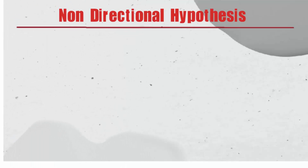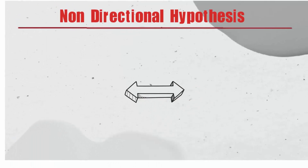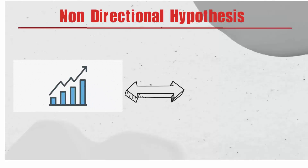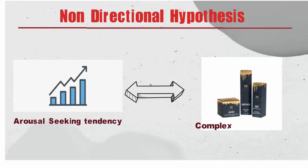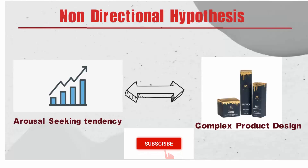For example: there is a relationship between arousal-seeking tendency and consumer preferences for complex product design. In this example, you can see that there is no clue as to whether arousal-seeking tendencies and preferences for complex product design are positively or negatively correlated. Here the direction of the relationship is not known, so we will use a non-directional hypothesis.